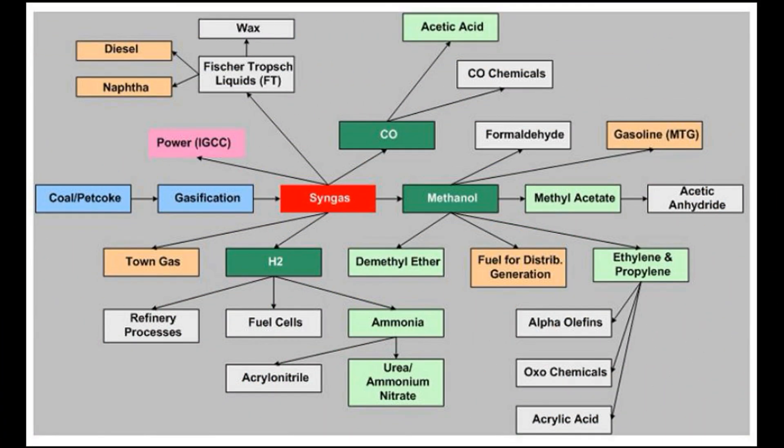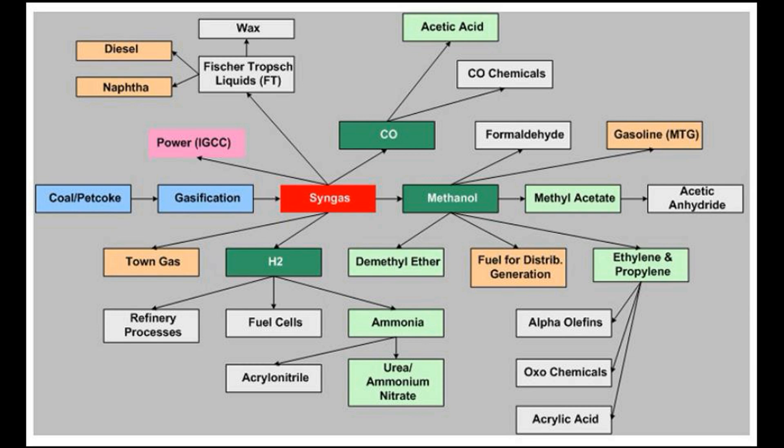Additionally, coal can be used to create all sorts of different chemicals. Looking at this graphic from Wikipedia, you can see coal coming in from the left in the blue box, and through the process of gasification, it turns into all sorts of different chemicals that we can use industrially. I won't get into all the details because it would be a video series in itself.